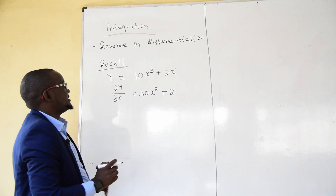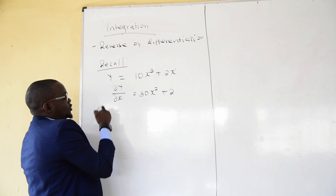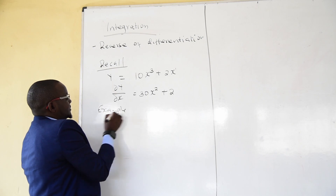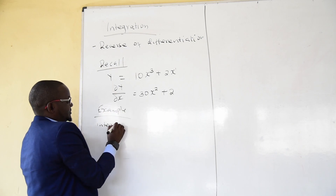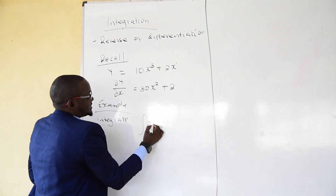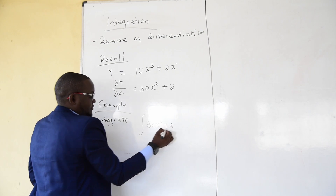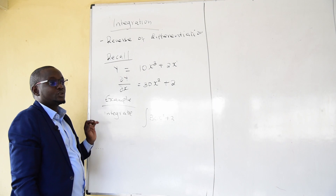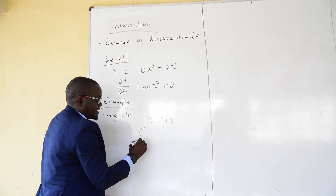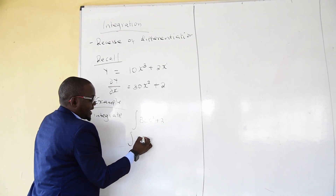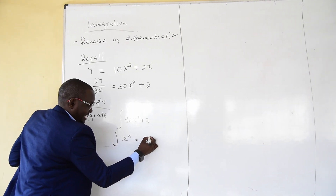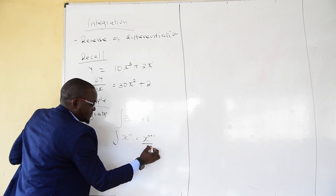This time we are doing the reverse. You can be told now to integrate. The sign for integration looks like this — integrate 30x squared plus 2. First we look at the normal integration rule: when you are given x power n and you are to integrate, what you do is take x to the power n plus 1, divided by n plus 1.